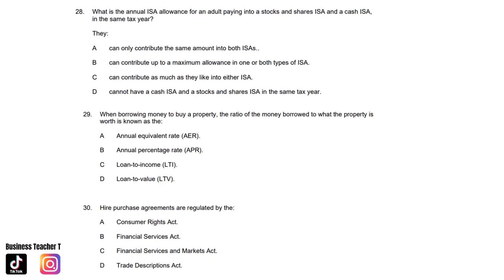Question twenty-eight: What is the annual ISA allowance for an adult paying into a stocks and shares ISA and a cash ISA in the same tax year? The answer is B. Can contribute up to a maximum allowance in one or both types of ISA. Question twenty-nine: When borrowing money to buy a property, the ratio of the money borrowed to what the property is worth is known as: A. Annual equivalent rate. B. Annual percentage rate. C. Loan to income. Or D. Loan to value. The answer is D. Loan to value.